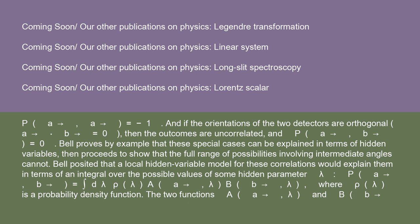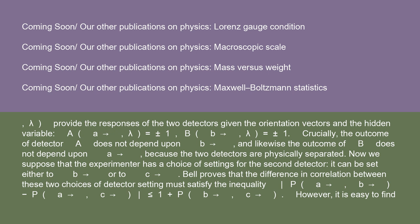Bell posited that a local hidden variable model for these correlations would explain them in terms of an integral over the possible values of some hidden parameter λ: P(a,b) = ∫dλ ρ(λ) A(a,λ) B(b,λ), where ρ(λ) is a probability density function. The functions A(a,λ) and B(b,λ) provide the responses of the two detectors given the orientation vectors and the hidden variable, with A(a,λ) = ±1 and B(b,λ) = ±1. Crucially, the outcome of detector A does not depend upon b, and likewise the outcome of B does not depend upon a, because the two detectors are physically separated. Bell proves that the difference in correlation between two choices of detector setting must satisfy: |P(a,b) − P(a,c)| ≤ 1 + P(b,c). However, it is easy to find situations where quantum mechanics violates this Bell inequality.